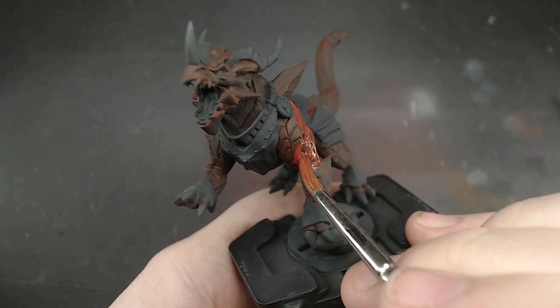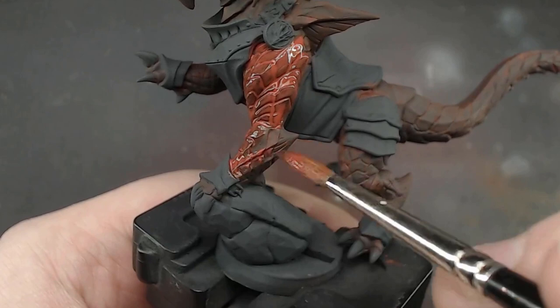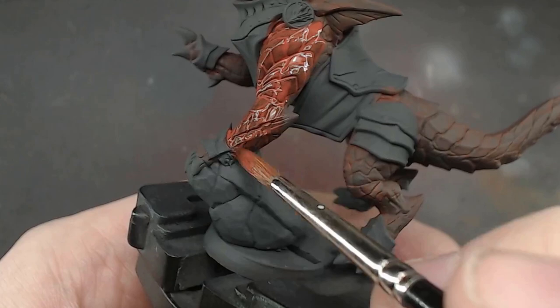However, since red pigment is semi-transparent, as it dries, more of that black shows through, and we actually get a much darker red than it looks going on, which is why I started with the dark grey instead of the pure black for a primer layer.